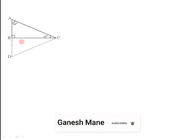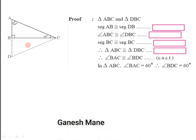By doing this construction we have got two triangles, and we are going to prove this theorem by form of activity. We get triangle ABC and triangle DBC, and we are trying to show these two triangles congruent. The first component is segment AB is congruent to segment DB, as we have done a construction here. So the reason is construction.